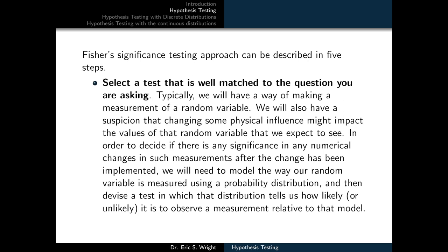Fisher's significance testing approach can be described in five steps. The first is to select a test that is well matched to the question you are asking. Typically we'll have a way of making a measurement of a random variable, and a suspicion that changing some physical influence might impact those values. We'll need to model the random variable using a probability distribution and then devise a test in which that distribution tells us how likely or unlikely it is to observe a measurement relative to that model.